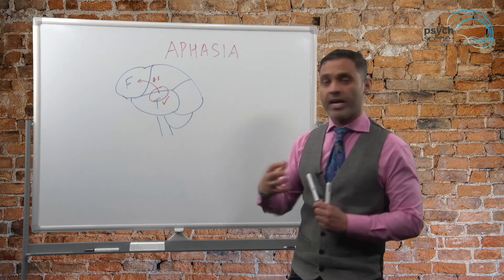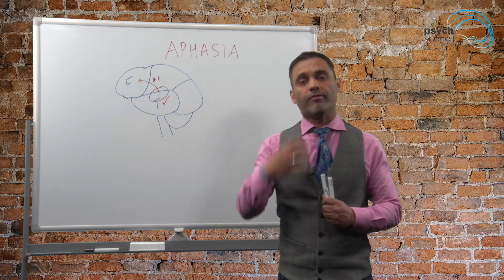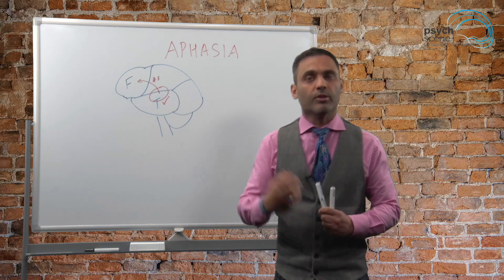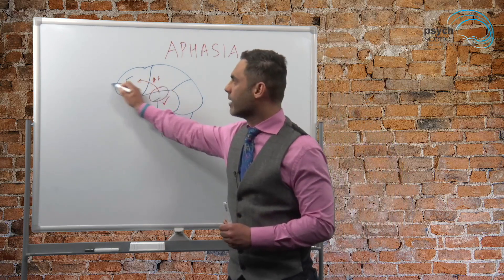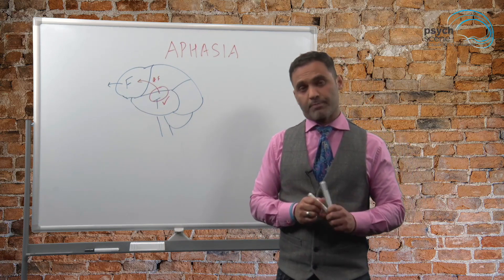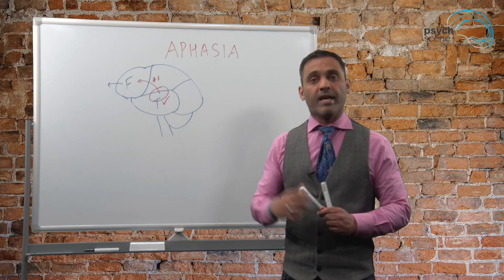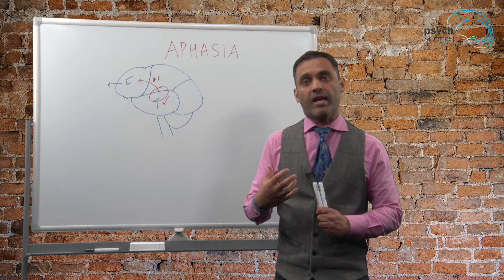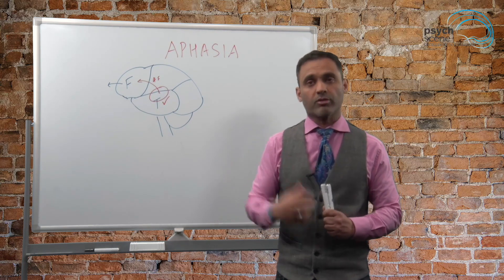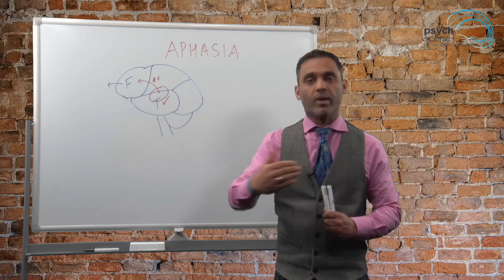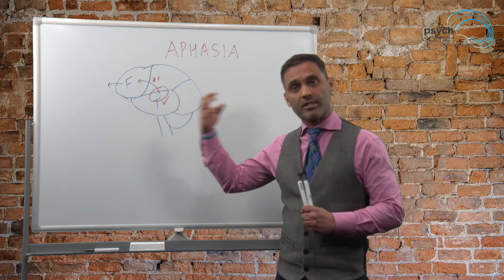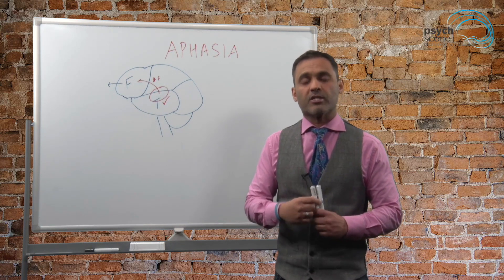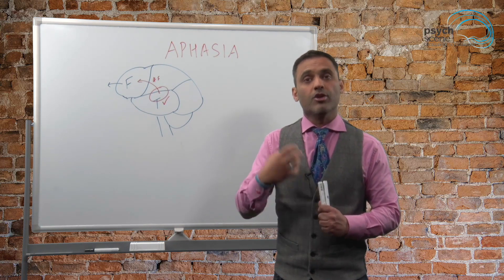The third area is the frontal lobe, which generally takes care of our motor functions. When it comes to speech, it helps us speak fluently. This frontal lobe area responsible for speech is known as Broca's area. If that part of the brain is affected due to stroke or brain injury, we end up with an aphasia known as motor aphasia, because it's a motor component — expressive aphasia, because we have to express it. It's known as Broca's aphasia, and it's known as non-fluent aphasia because speech is really effortful and not fluent.